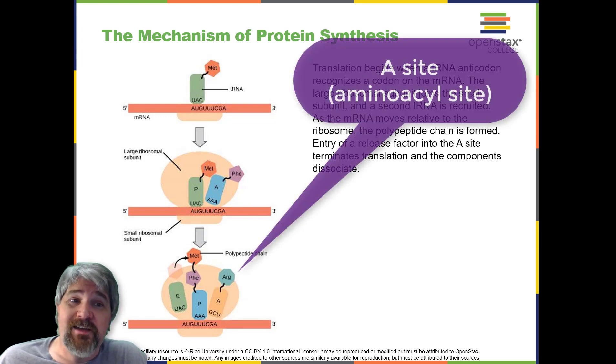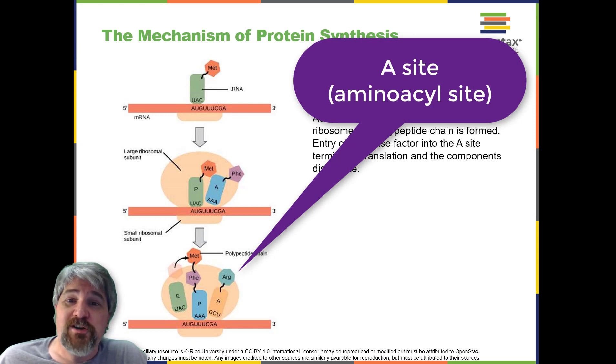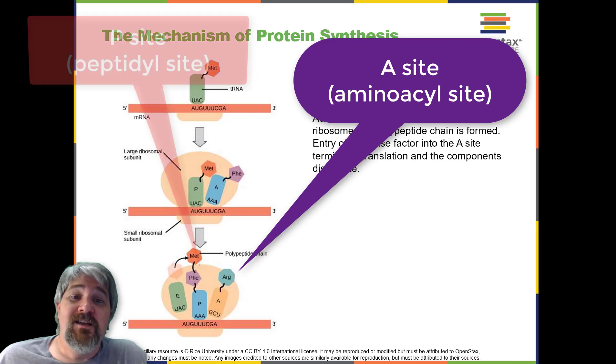The A site binds the incoming charged tRNA, tRNAs with their attached specific amino acids. The P site binds the charged tRNAs carrying amino acids that have formed bonds with the growing polypeptide chain, but have not yet dissociated from their corresponding tRNA.